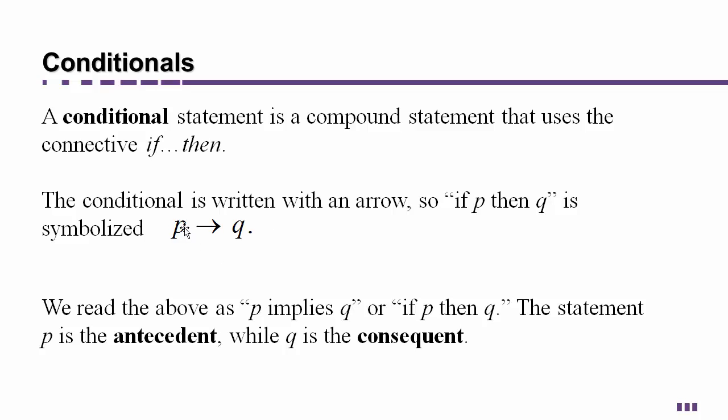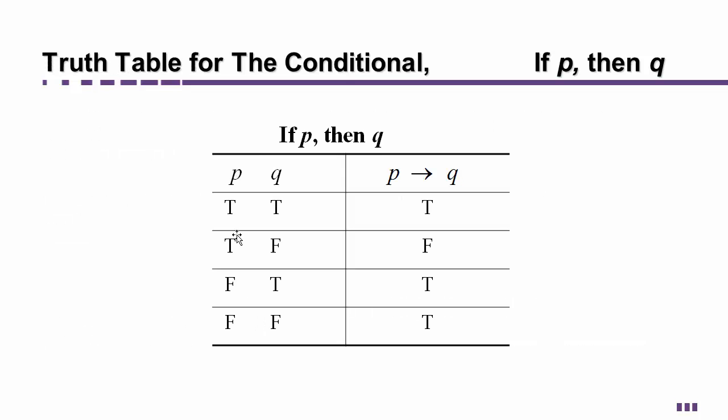We say P is the antecedent and Q is the consequent. You can think of 'consequent' as the mathematical version of consequence — something that comes from a certain action. So it makes sense that Q is the thing that comes from P happening: if P then Q. For example, if you break the law then you go to jail — that's the consequence, of course assuming you get caught and convicted, but you get the idea.